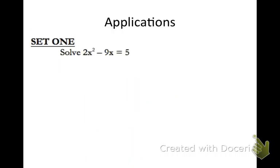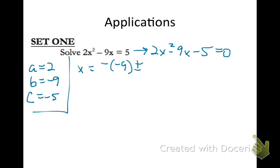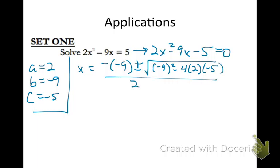Now let's go to the applications. Sometimes you'll have a quadratic equation that is not in standard form, so the first thing you need to do is make sure it's set equal to 0. Let's subtract the 5 over. Then pick out a, b — which is negative 9 — and c — which is negative 5. We'll do it from memory this time: take the negative of negative 9, plus or minus the square root of negative 9 squared minus 4 times a (which is 2) times c (which is negative 5), all divided by 2 times 2.